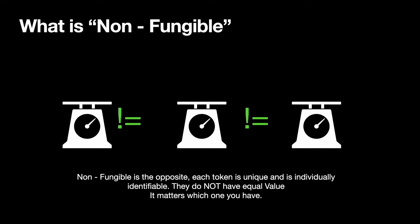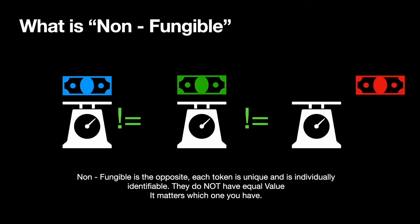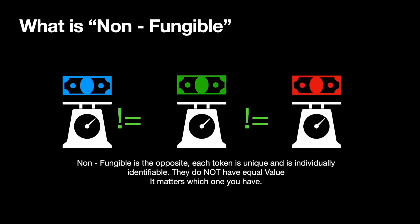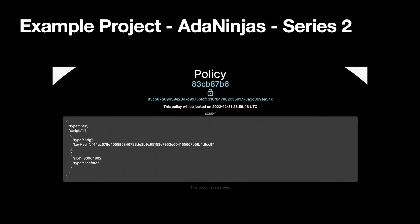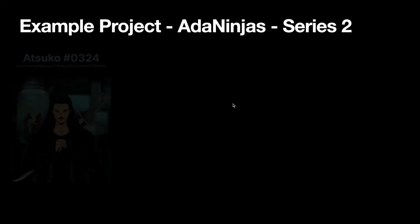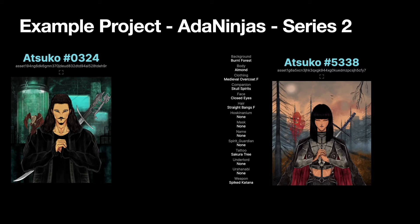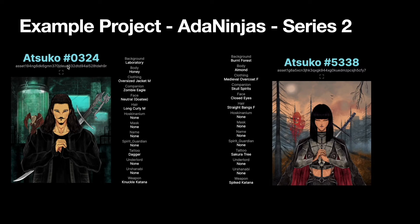Non-fungible is the opposite — this is a specific case of unique and identifiable. They're not equal in value and it matters which one you have. Here's an example project: ADA Ninjas Series 2. You can see the policy ID for it, and that is a unique policy ID. Every asset has its own asset ID within it. So the policy ID tells you about a collection of tokens, and the asset ID is a specific unique non-fungible token within that collection.